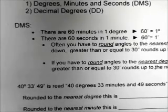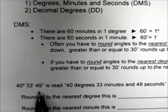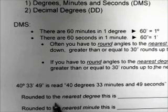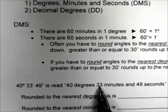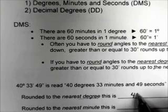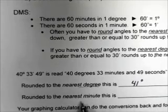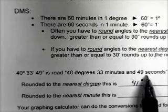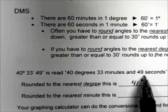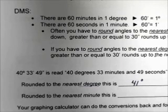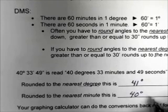For example, we have 40 degrees, 33 minutes, 49 seconds. Rounded to the nearest degree, we look at the minutes: 33 is greater than 30, so it rounds up to 41 degrees. Rounded to the nearest minute, we look at the seconds: 49 seconds is greater than 30, so the 33 minutes rounds up to 34 minutes — giving us 40 degrees, 34 minutes.